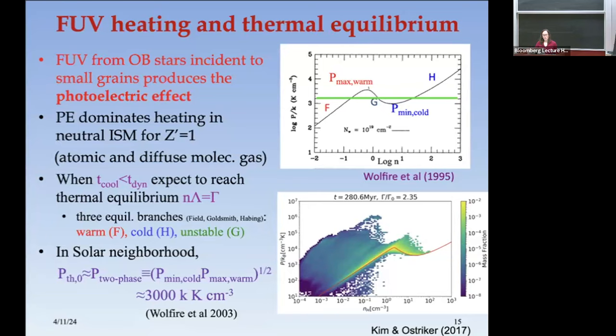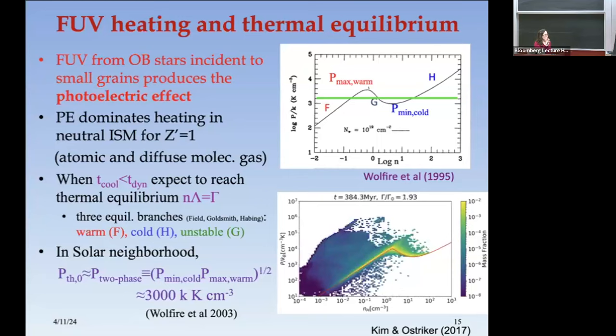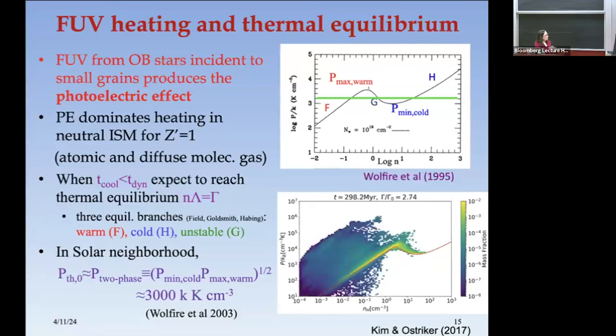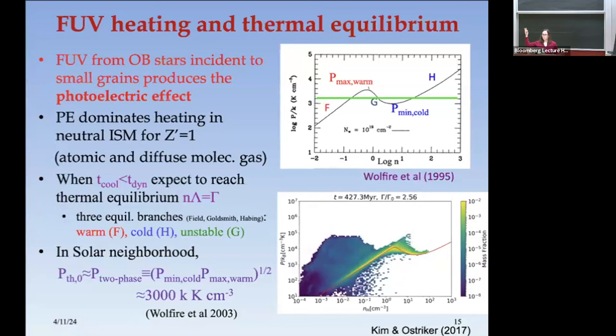Because cooling timescales are short, you expect to reach thermal equilibrium, and that's what simulations show — the gas really wants to be in thermal equilibrium. If you take the geometric mean of the maximum warm and minimum cold branch pressures, you get P/k of about 3000. That value fluctuates up and down because the heating is changing as the star formation rate changes.